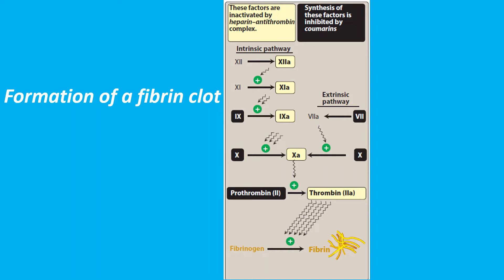Hello everyone, welcome to today's video about heparin's mechanism of action — how heparin works as an anticoagulant. This diagram shows how a clot is formed. As you can see, activated factor 10 and activated factor 2 finally lead to the conversion of fibrinogen to fibrin, which is used for clot formation.